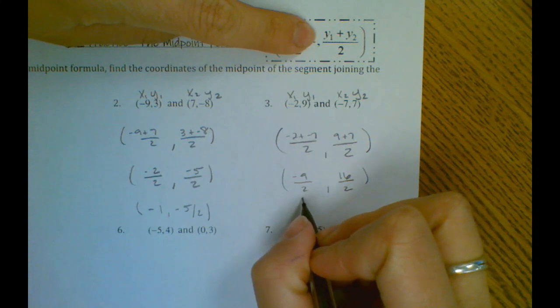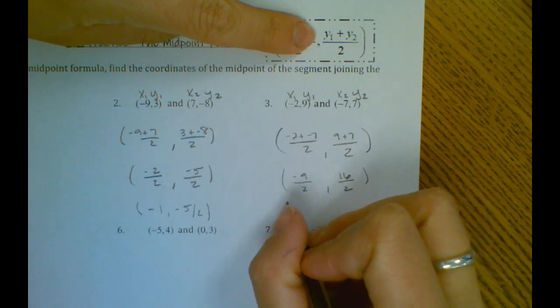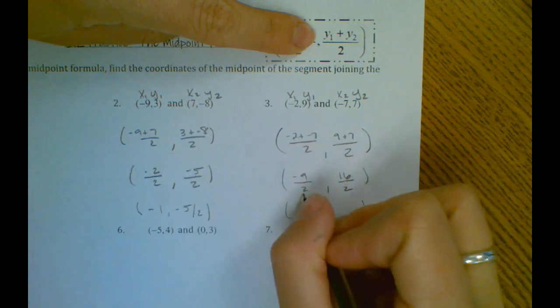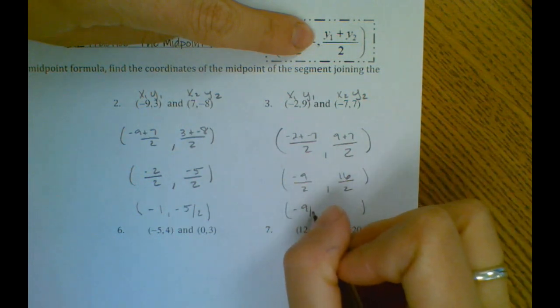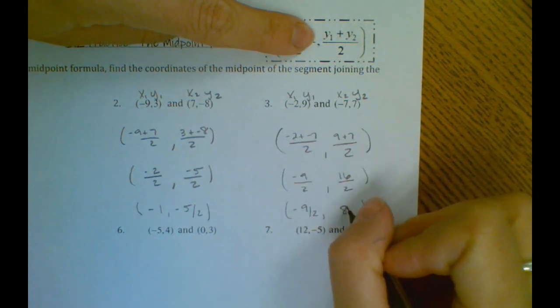Then here we will simplify. Negative 9 over 2 we can't reduce that anymore. 16 over 2 becomes 8.